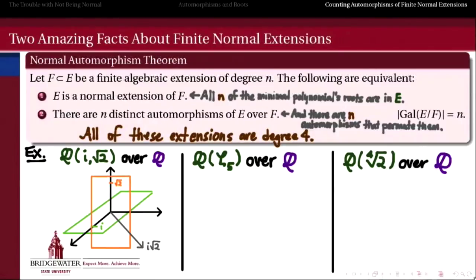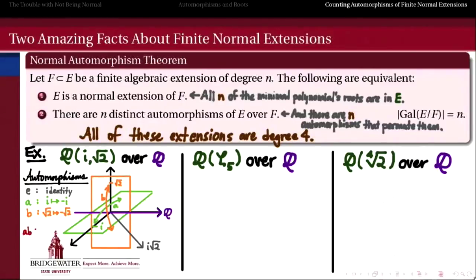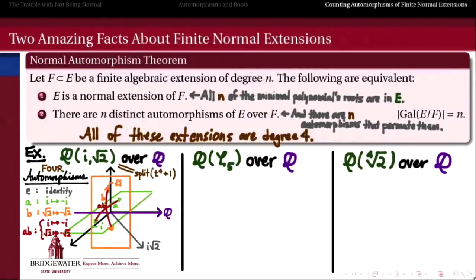First, Q adjoined with i and √2. We've seen in a previous video that there are a total of four automorphisms of this field over Q: the identity, automorphism A which trades i with minus i, automorphism B which trades √2 with minus √2, and the composition of those two. That gives us a total of 4, which agrees with the degree of this extension precisely because this is a normal extension of Q — it happens to be the splitting field of the polynomial t⁴ + 1 with rational coefficients.